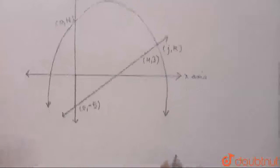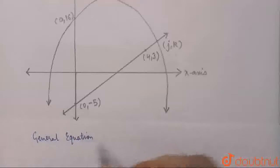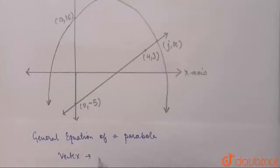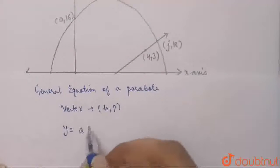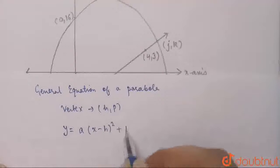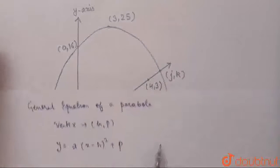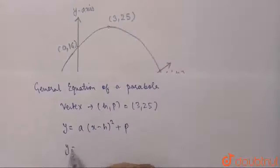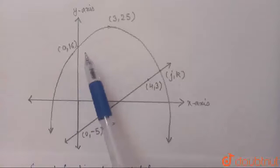Now we know that the general equation of a parabola whose vertex is (h, p) is given as y = a(x - h)² + p. Here we know that the vertex of this parabola is (3, 25). So putting the value of the vertex, we get y = a(x - 3)² + 25. We also know that the point (0, 16) lies on the parabola.